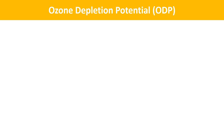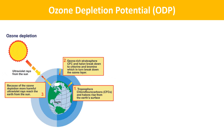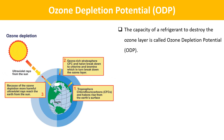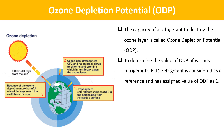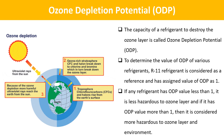The next term is Ozone Depletion Potential. The capacity of a refrigerant to destroy the ozone layer is called ozone depletion potential. To determine the ODP value of various refrigerants, R11 refrigerant is considered as a reference and has an ODP value of 1. If any refrigerant has an ODP value less than 1, it is less hazardous to the ozone layer; if it has an ODP value more than 1, it is considered more hazardous to the ozone layer and environment.